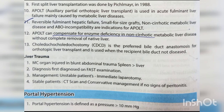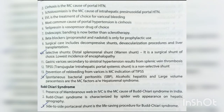Portal hypertension is defined as portal pressure greater than 10 mmHg. Cirrhosis is the most common cause. Schistosomiasis is the most common cause of intrahepatic perisinusoidal portal hypertension. EVL (endoscopic variceal ligation) is the treatment of choice for variceal bleeding. Terlipressin is the vasopressor drug of choice. Endoscopic banding is now better than sclerotherapy. Beta blockers (propranolol and nadolol) are for prophylactic use only. Surgical care includes decompressive shunts, devascularization procedures, and liver transplantation. Distal splenorenal shunt (Warren shunt) is the surgical shunt of choice with the lowest incidence of encephalopathy. Gastric varices secondary to sinistral hypertension result from splenic vein thrombosis.